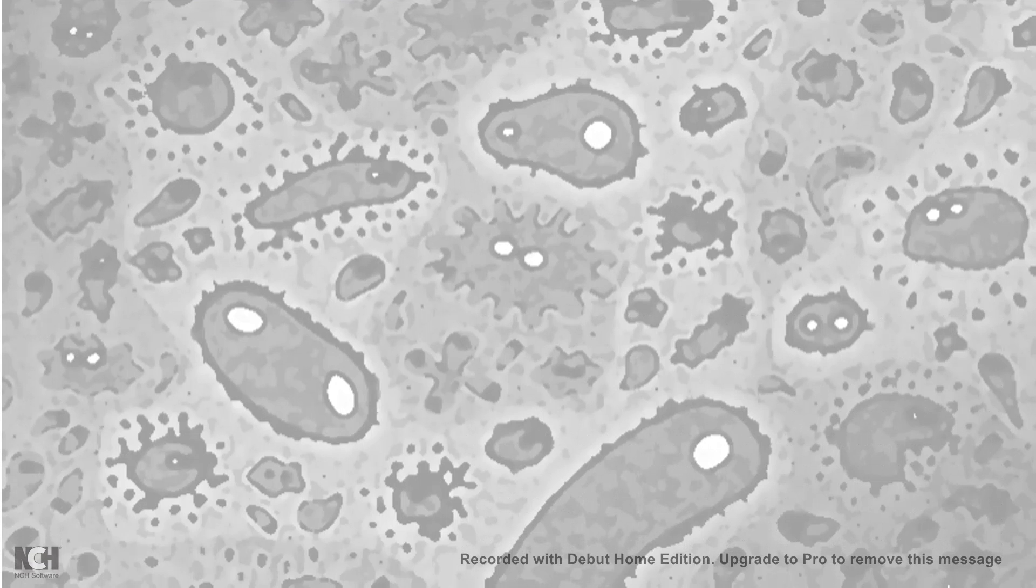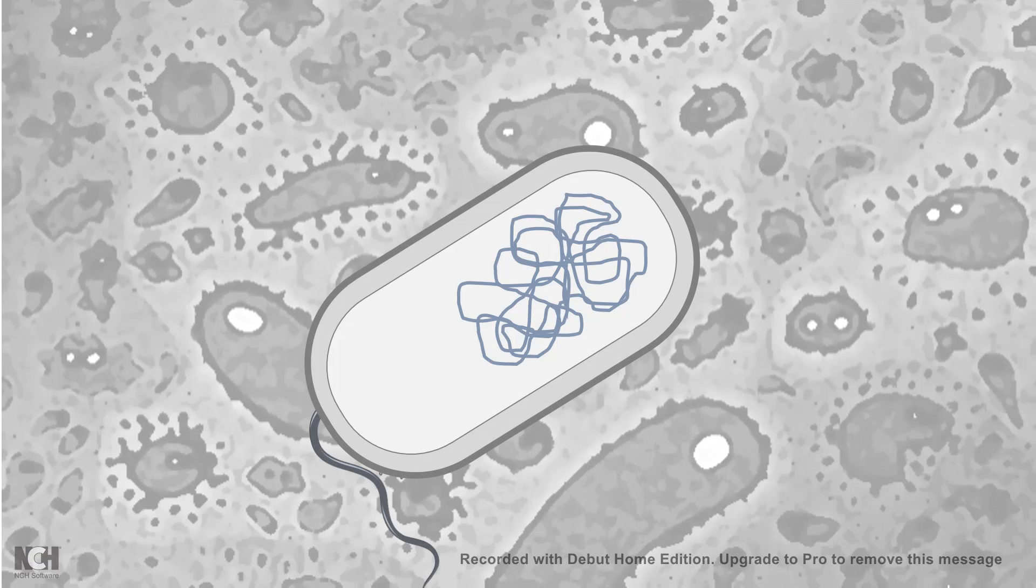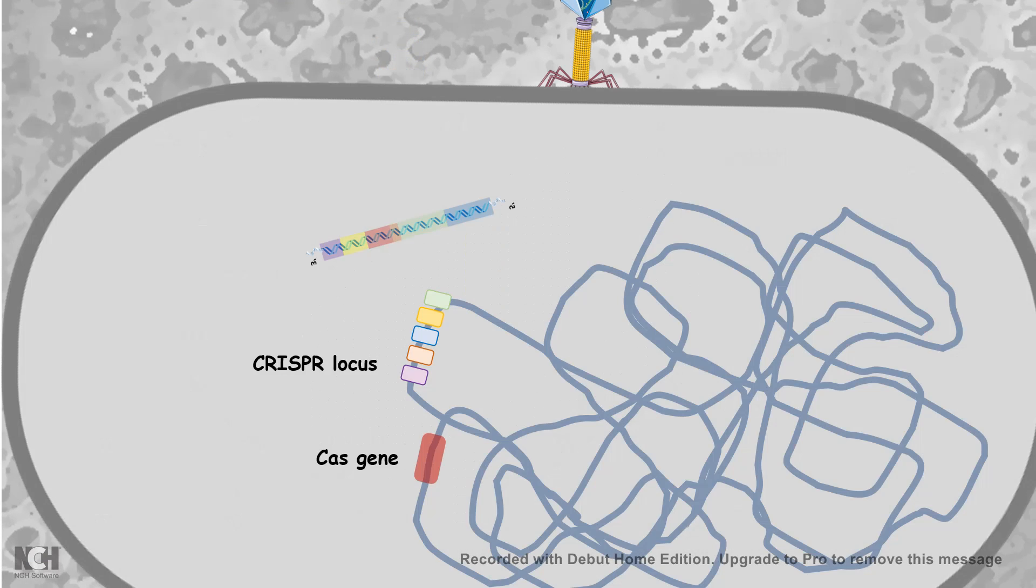One hypothesis is when the phage infected the bacteria and the phage genetic material is inside the bacteria and tries to get integrated into the bacterial genome, these sequences remain incorporated in the CRISPR locus. Now once the sequence gets incorporated into the CRISPR locus, they become part of the bacterial genome and let's say there is a second infection by the same phage.